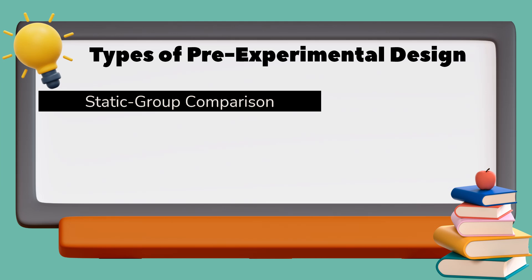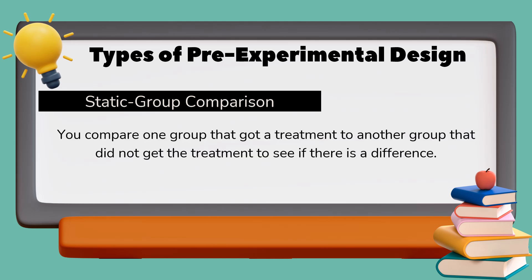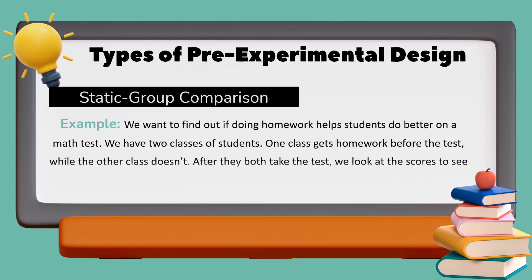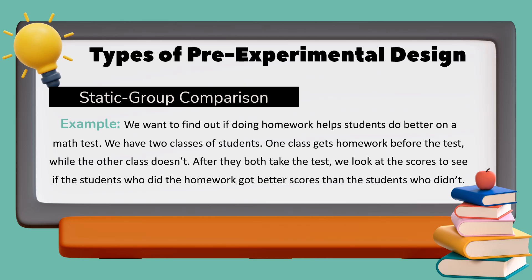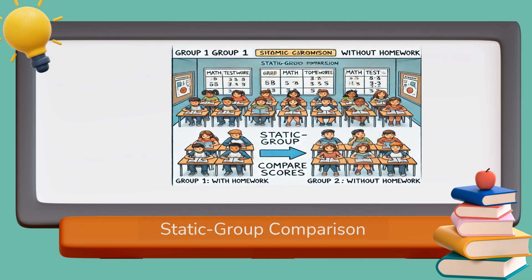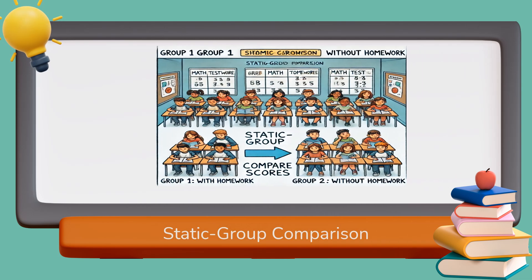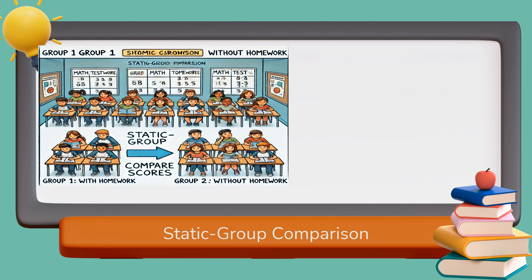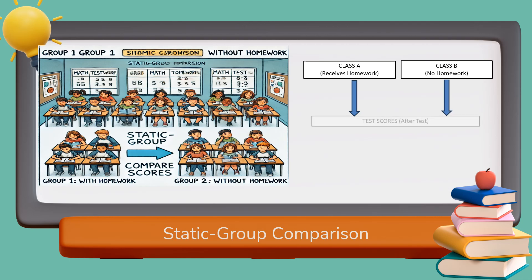In static group comparison, you compare one group that received a treatment to another group that did not, to see if there is a difference. For example, to find out if doing homework helps students do better on a math test, one class gets homework before the test while the other doesn't. After both take the test, scores are compared to see if the homework group did better.